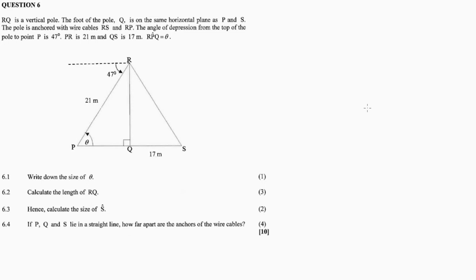RQ is a vertical pole. The foot of the pole, Q, is on the same horizontal plane as P and S. The pole is anchored with wire cables RS and RP. So, RQ is basically a pole with some support structure — maybe a flag or something — just to provide more stability to the pole.